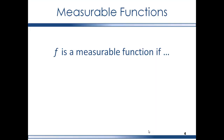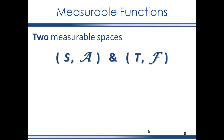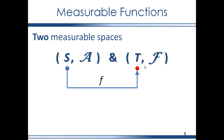So what makes a function a measurable function? Let's say we have two measurable spaces. In one measurable space you have the original domain S with its sigma algebra A. In the other measurable space you have another original domain T with its sigma algebra F. And we have a function f whose domain is S and whose range is T.